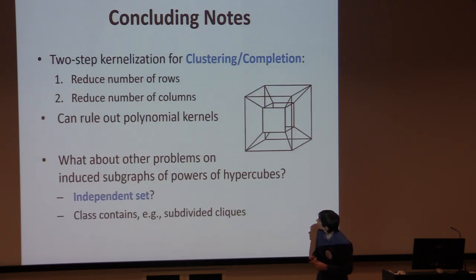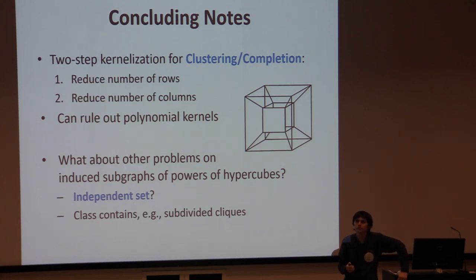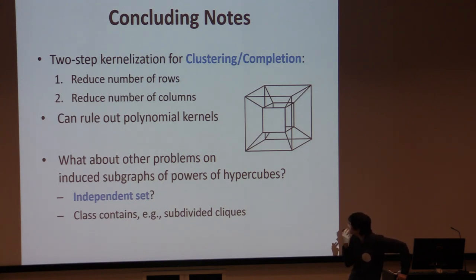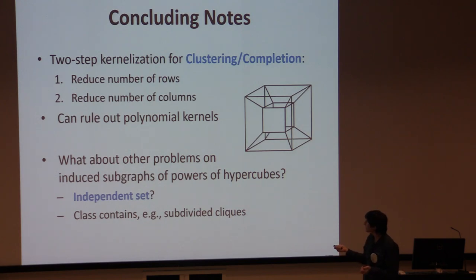To conclude: I showed a two-step kernelization for matrix clustering and completion, where we first reduce the number of rows, then reduce the number of columns. We know how to show it doesn't have polynomial kernels. It may be interesting to think about what other problems make sense on this graph class arising from clustering — for instance, independent set corresponds to finding k outliers that are sufficiently far from each other. This is an interesting graph class: it contains cliques, subdivided cliques, but still has enough structure to give FPT algorithms for dominating set.